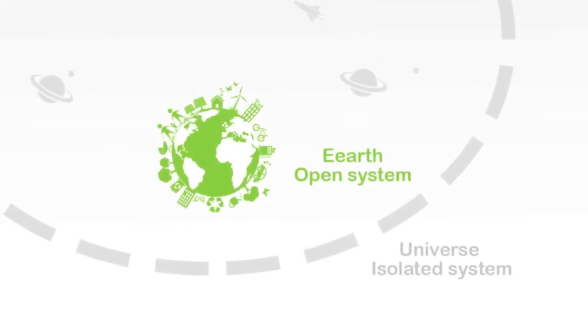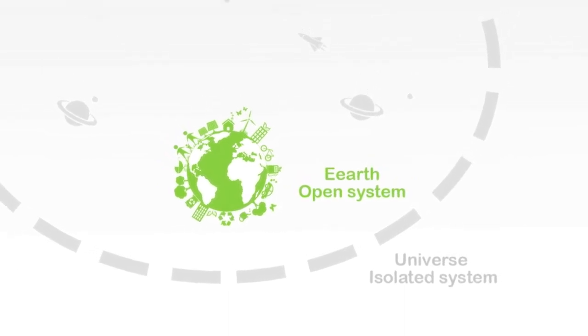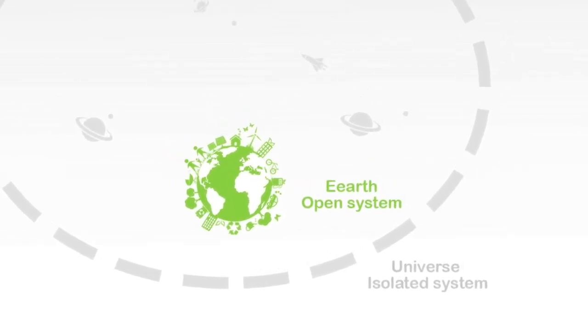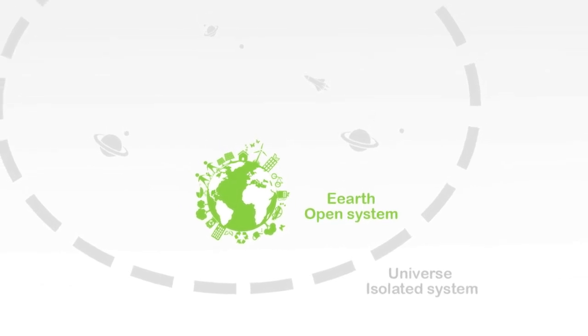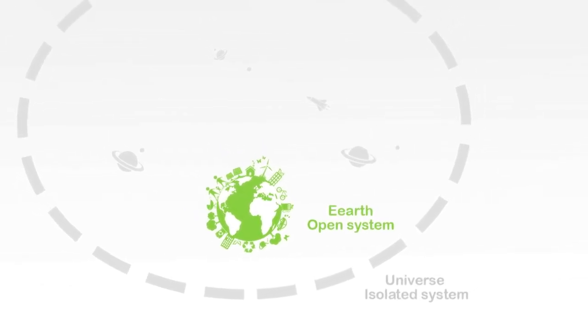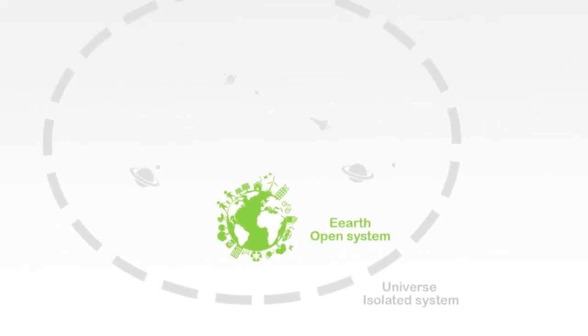A system can be either open or isolated. Isolated systems do not interact with their environment, but most systems are open, meaning that there is an exchange of energy and resources between the system and its environment.